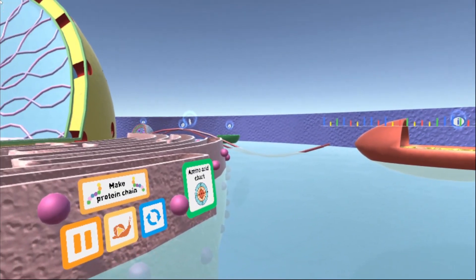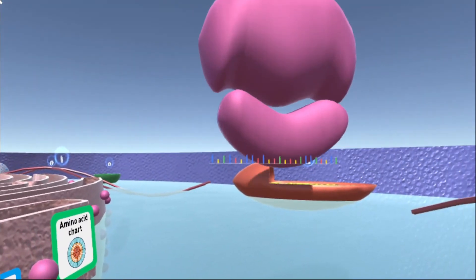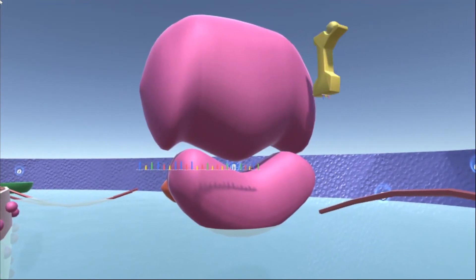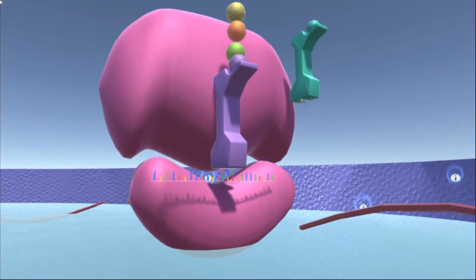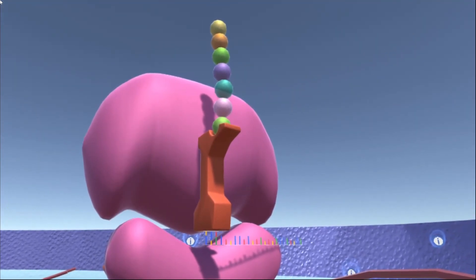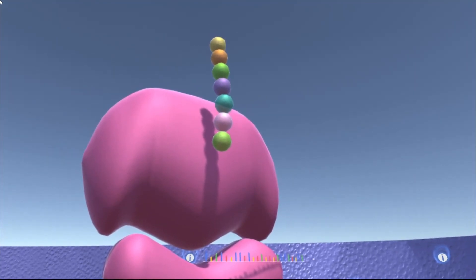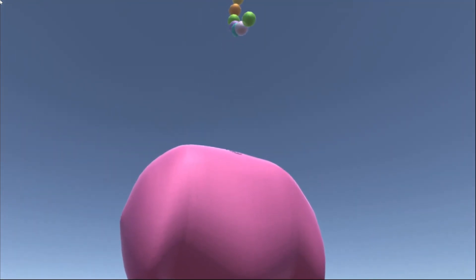So up next we have this golden button that says make protein chain. If I click on this, you'll see we have a giant ribosome that pops up. And we start to transcribe our mRNA into a protein chain of amino acids that will then start folding up and move on off to its next location.